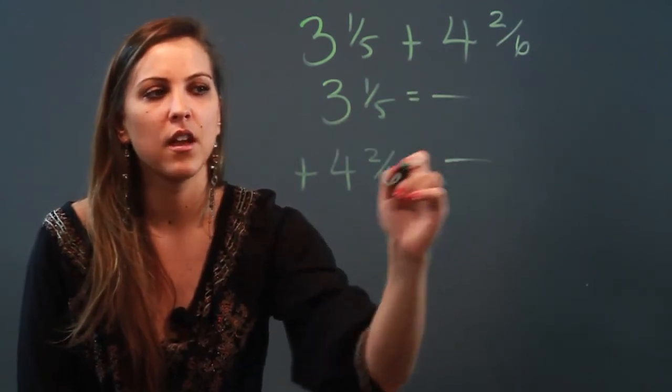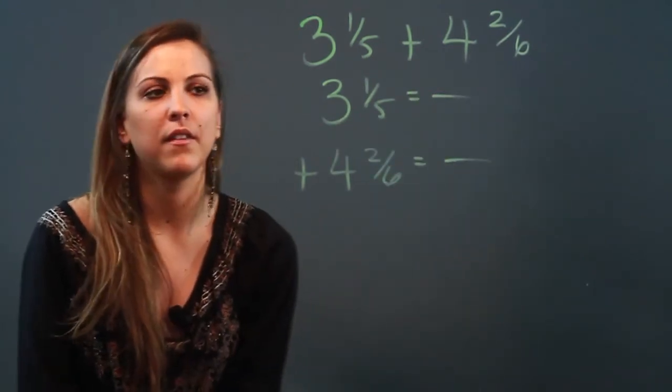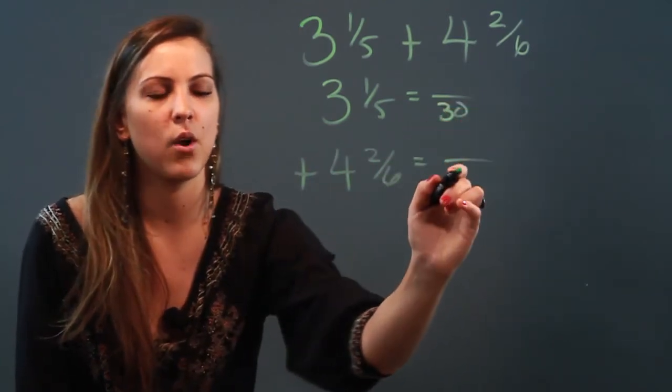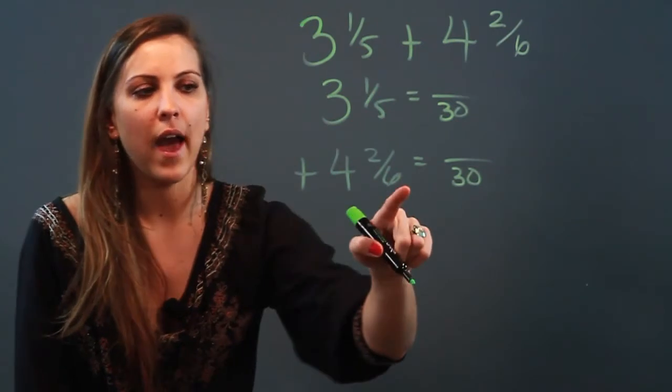I'm gonna have to convert these two fractions so that they have a common denominator. The least common denominator of 5 and 6 is 30, so I'm gonna go ahead and convert these so their denominator is 30.